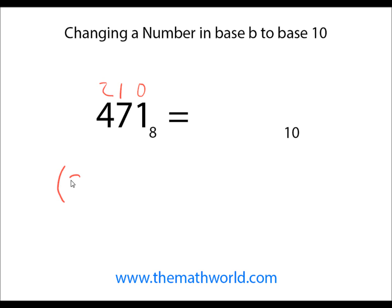So the first thing, we're going to take 8 to the 2nd power. We're going to multiply it by the number underneath it, which is 4. We're going to add that to 8 to the 1st power times 7, the number underneath it. Add that to 8 to the 0th power times 1.